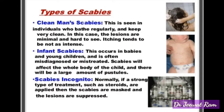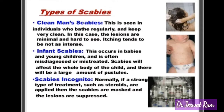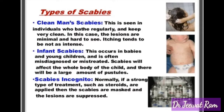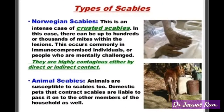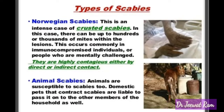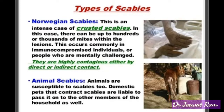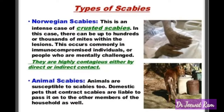Scabies incognito: normally if a strong type of treatment such as steroids are applied, then the scabies are masked and the lesions are suppressed. Norwegian scabies: this is an intense case of crusted scabies. In this case there can be up to hundreds or thousands of mites within the lesions.